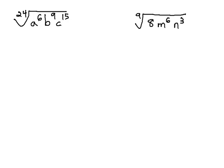In this video, we're going to take a look at how we can reduce the index on a radical. Because the index and the exponents can be rewritten as fractions, we know we can reduce these fractions by dividing each by the same common factor.